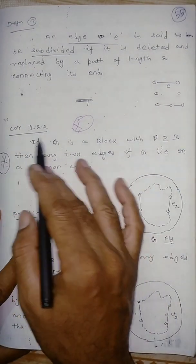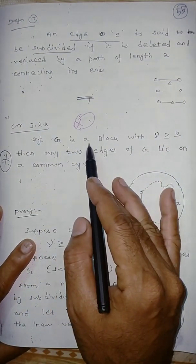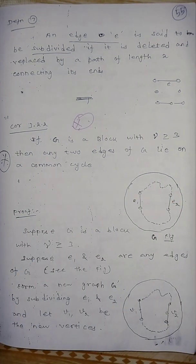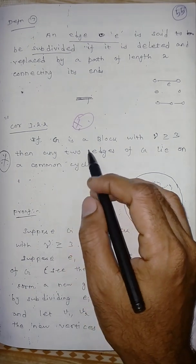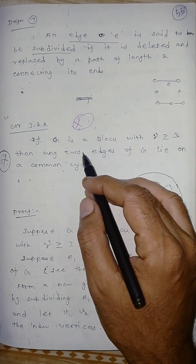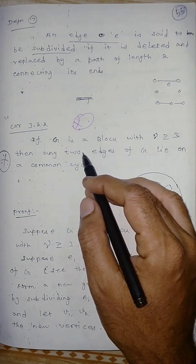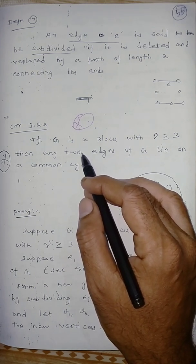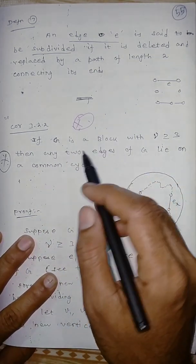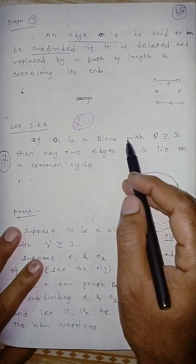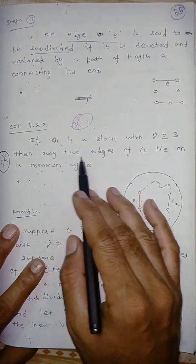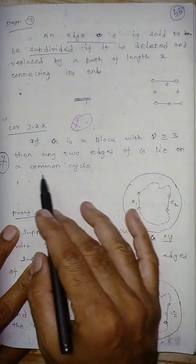Next corollary: If G is a block — block already defined — with number of vertices greater than or equal to 3, then any two edges of G lie on a common cycle.